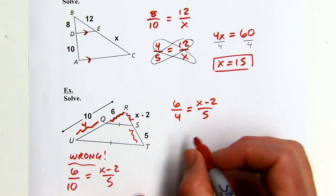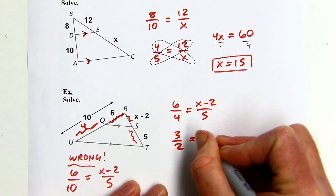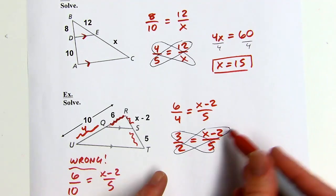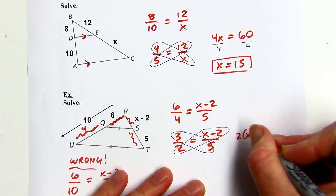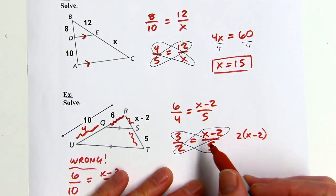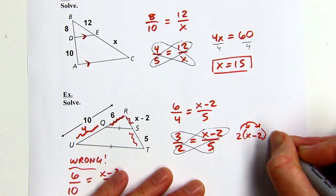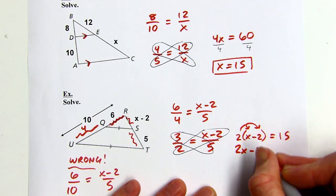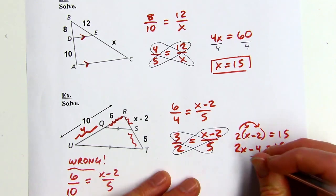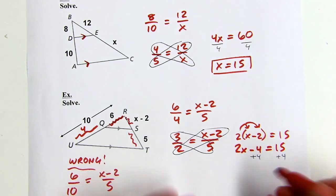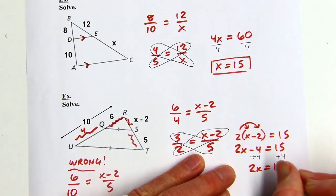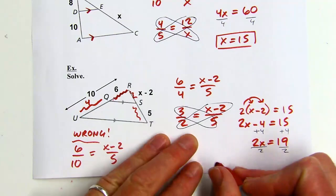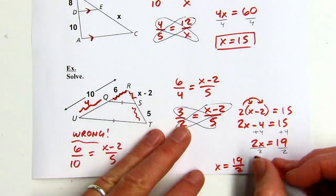You can reduce that fraction or go straight to cross multiplying. Cross multiplying gives 2 times the quantity x minus 2 on one side — remember to distribute — and 3 times 5 equals 15 on the other. So 2x minus 4 equals 15. Adding 4 to both sides and dividing by 2 gives x equals 19 over 2, or 9.5.